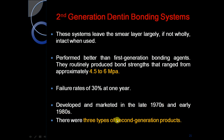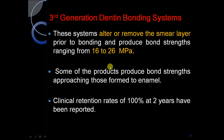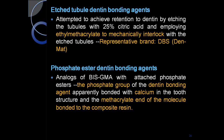There were three types of second generation products. H-tubule dentine bonding agents attempted to achieve retention to dentine by etching the tubules with 25% citric acid and employing ethyl methacrylate-oxalate primers.